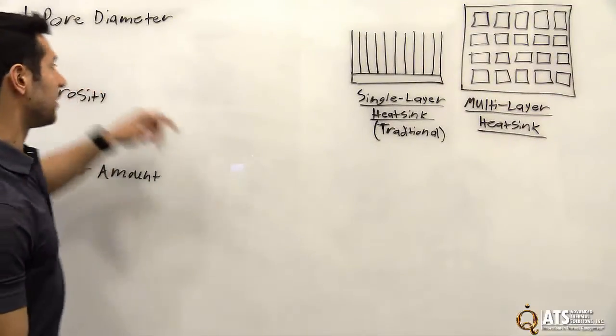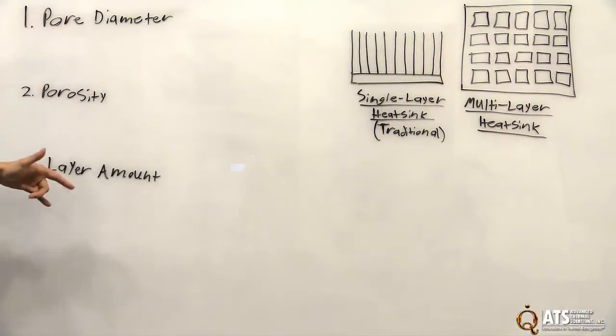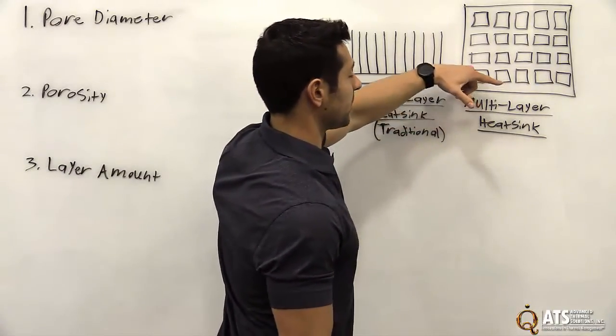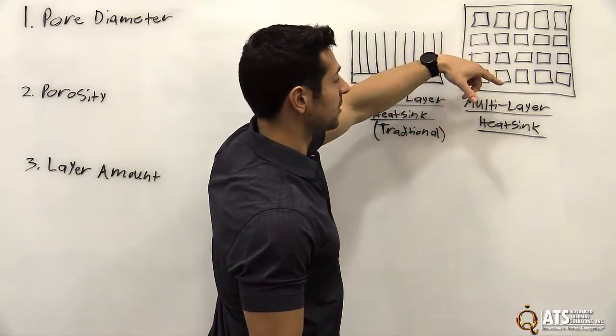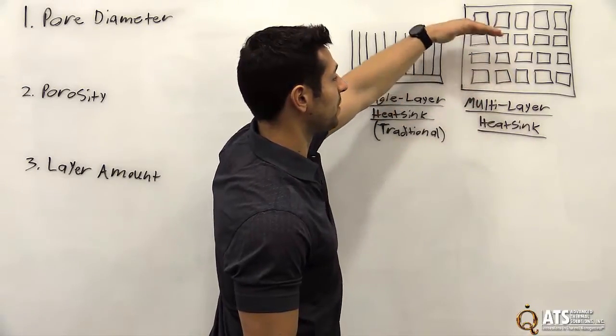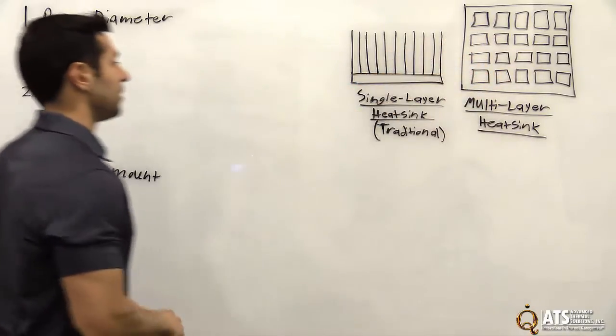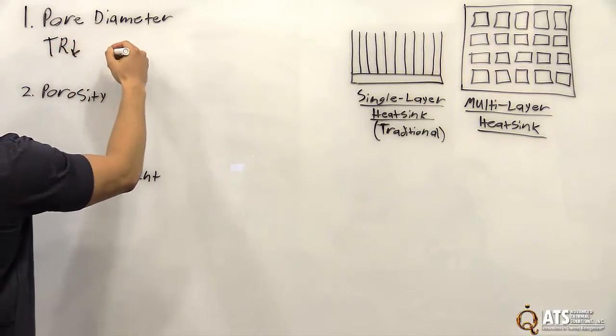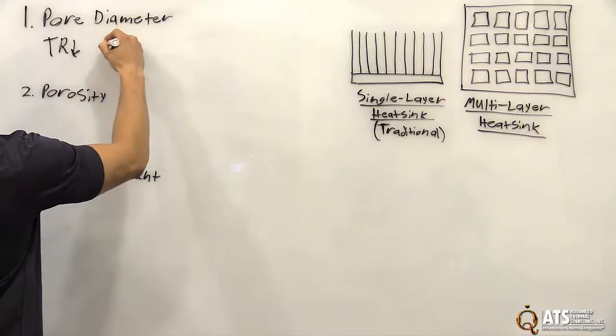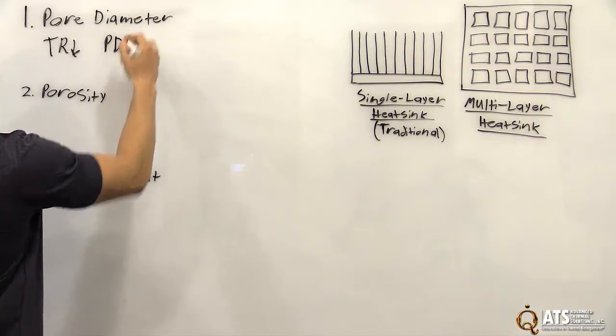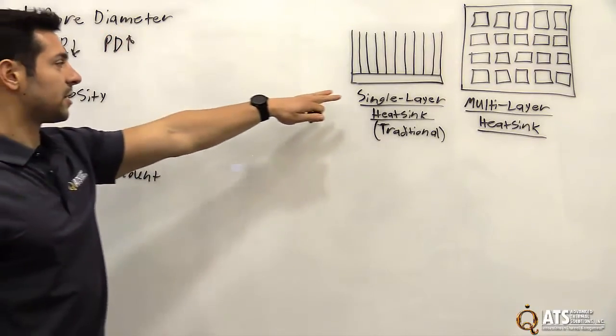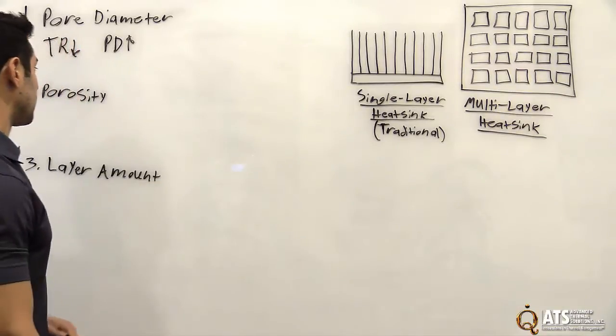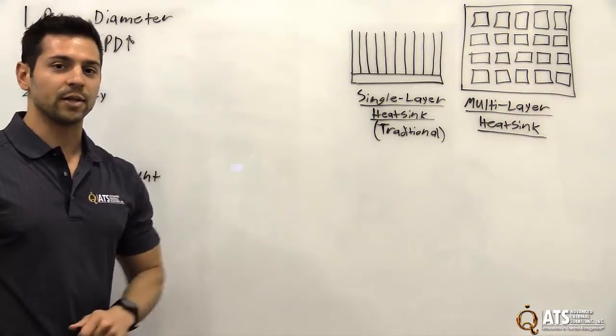So research has been done on these three scaling properties. For pore diameter, as the pore diameter increases in each successive layer from the heated surface, we find that the thermal resistance decreases, which is of course good for performance, and pressure drop increases. This same characteristic is found in today's traditional heat sinks. So I think we can strive for a little bit better results.